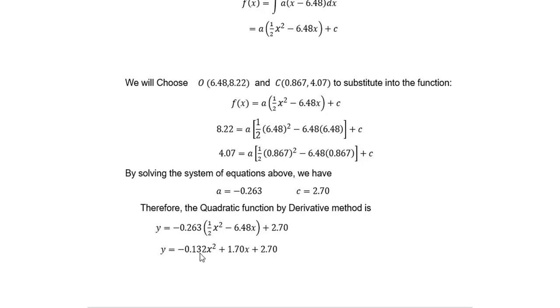Then you simplify. You will get y = -0.132x² + 1.70x + 2.70.